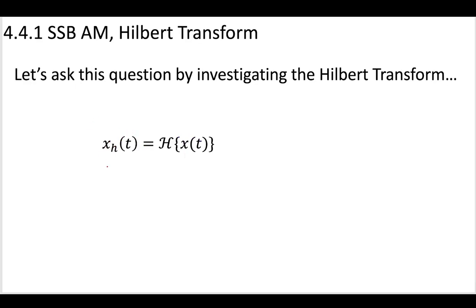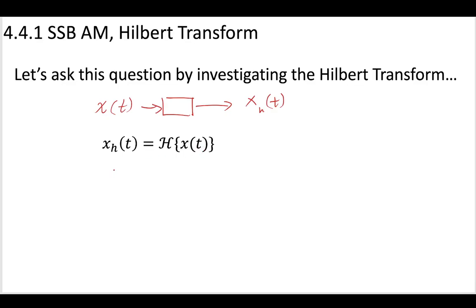Let's imagine some signal X_H — this signal has undergone a Hilbert transform. So this is a signal X(t) that has undergone a Hilbert transform. It went into a transfer function and came out as this Hilbert transformed signal. So that means we have some H, and you put in this signal X(t), and out pops your Hilbert transformed signal. So what is that Hilbert transformed signal?